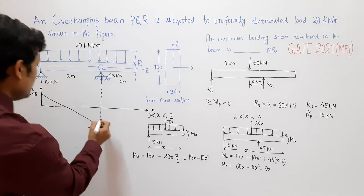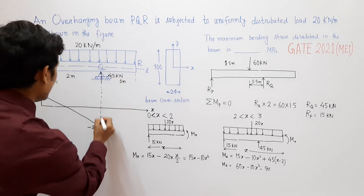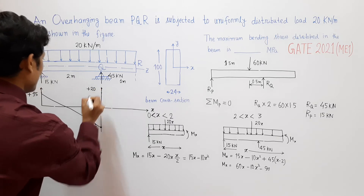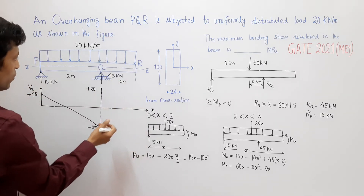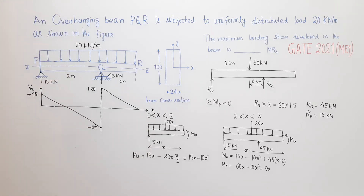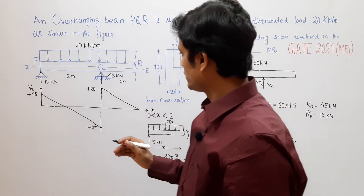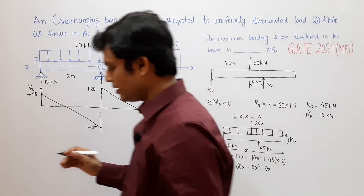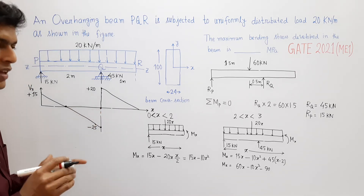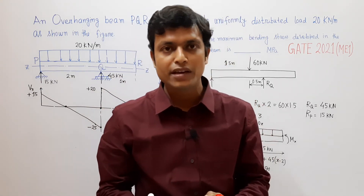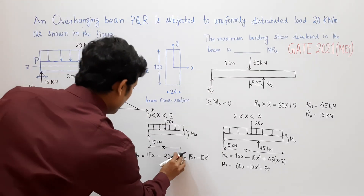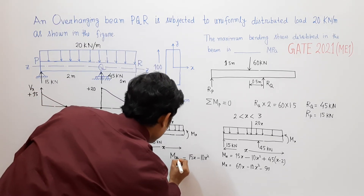At Q there is an upward reaction of 45 kilonewton, so shear jumps from minus 25 to minus 25 plus 45 equals plus 20 kilonewton. Then over the 1 meter overhang QR, the load is 20 kilonewton bringing shear to zero at R. The shear force changes sign at two points — one between P and Q, and one at R — indicating locations of maximum bending moment.